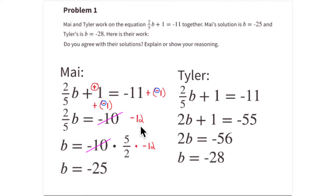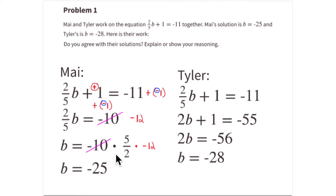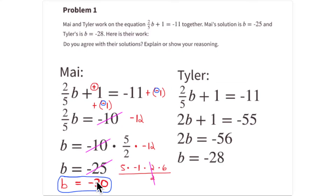So if 2/5·b = -12, she then multiplies by the reciprocal, or multiplicative inverse, of 2/5. To remove this 2/5, you multiply by 5/2, which is the reciprocal. That gives you b = -12 times 5/2. Half of -12 is -6, and -6 times 5 is -30, so the correct answer should be -30.